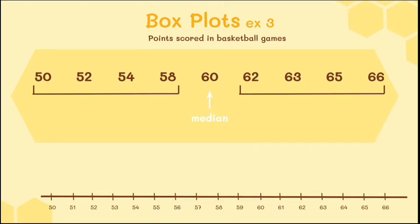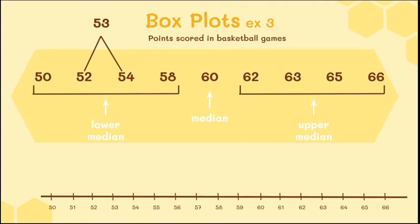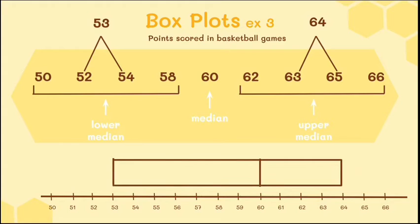With four numbers on each side, there's no single middle value, so the lower median is right in between. We find the value between 52 and 54, which is 53 — even though it's not part of the data set. For the upper median, we find the value between 63 and 65, which is 64. So the three values for the box are 53, 60, and 64. Draw those three lines, form your box, then extend the lines to the minimum of 50 and maximum of 66. That becomes your box plot.